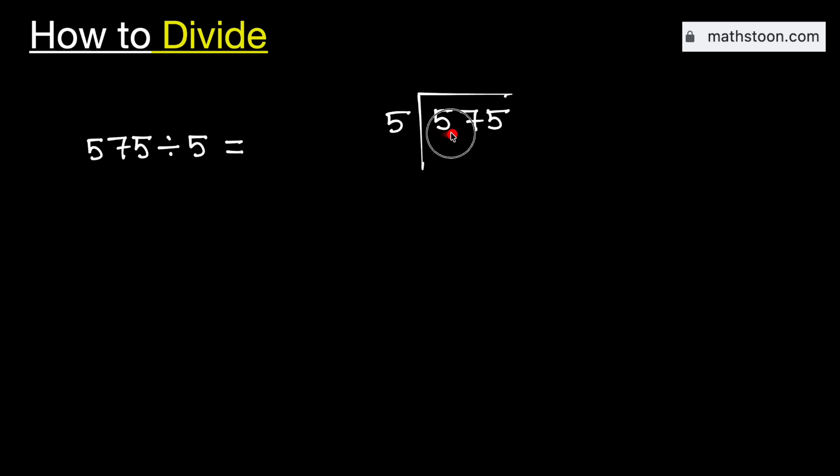Consider the first digit 5. We know that 5 times 1 is 5. Subtract, we get 0.